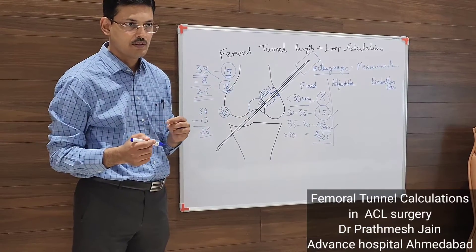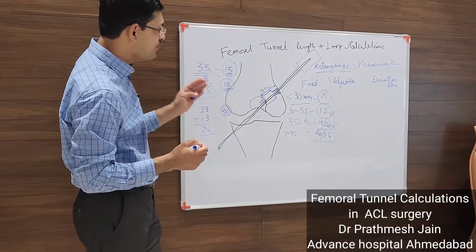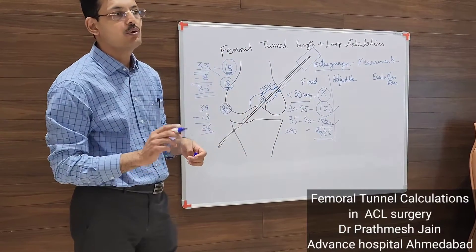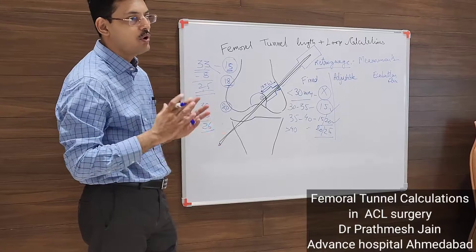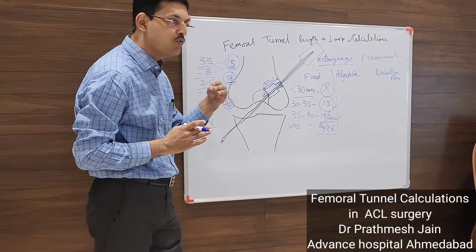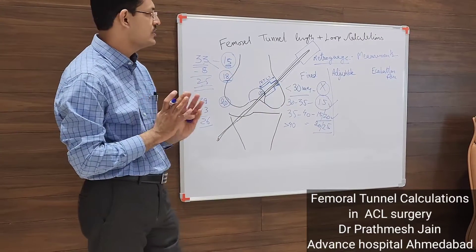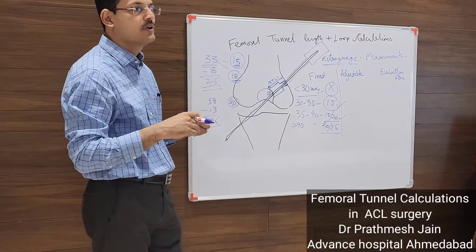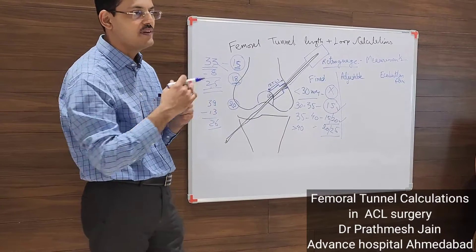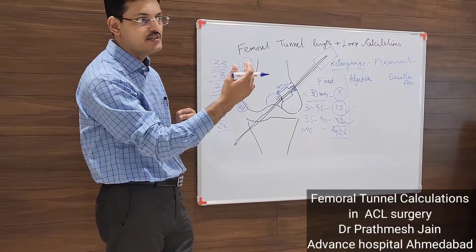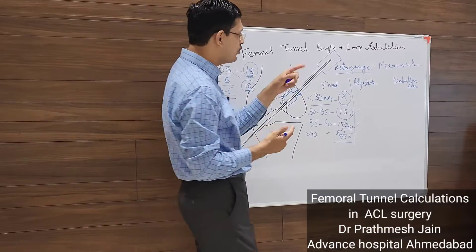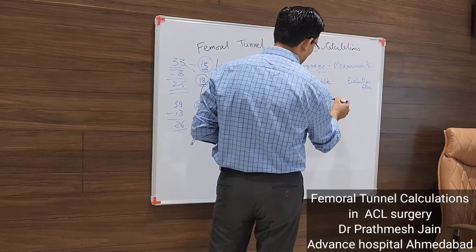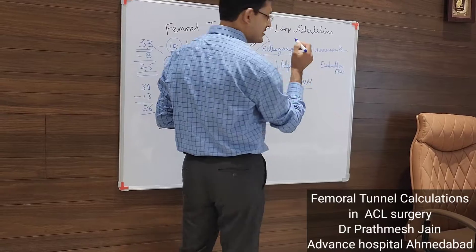If you are using an adjustable loop, you just calculate the amount of graft you want inside the tunnel. Supposedly you decide you want 20 mm of graft inside the tunnel — your graft length is around 7 centimeters and you want 2 centimeters inside — so you simply drill to 20 mm. That's it.